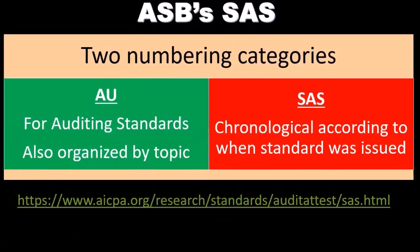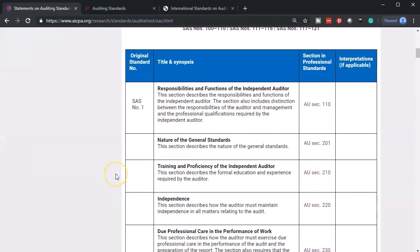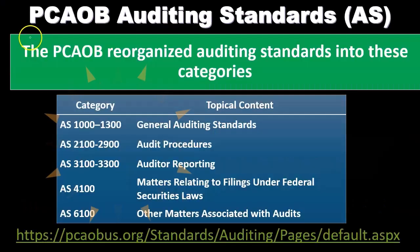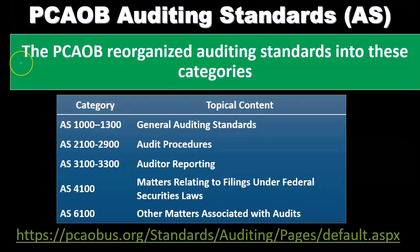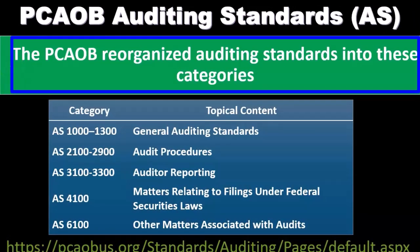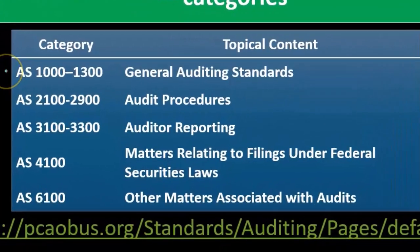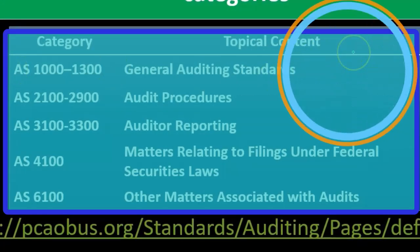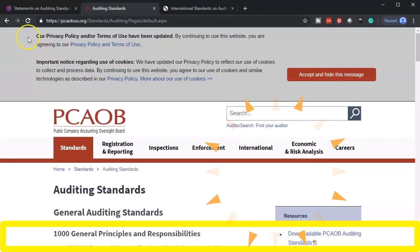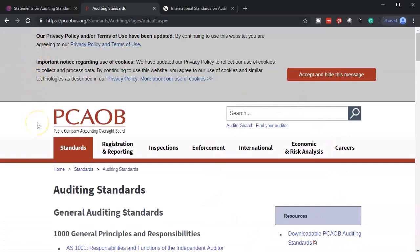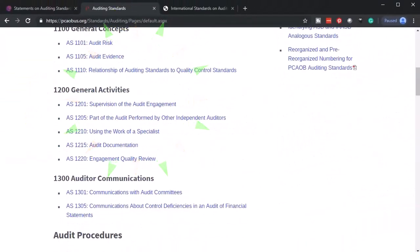Here's a look at the Statement on Auditing Standards on the website. Next, we have the PCAOB Auditing Standards, or AS. The PCAOB reorganized its auditing standards into topical categories. You can see those categories here, and the information can be found at the provided link. Here is an example of the PCAOB website — you could scroll down to get the general auditing standards and go through them.